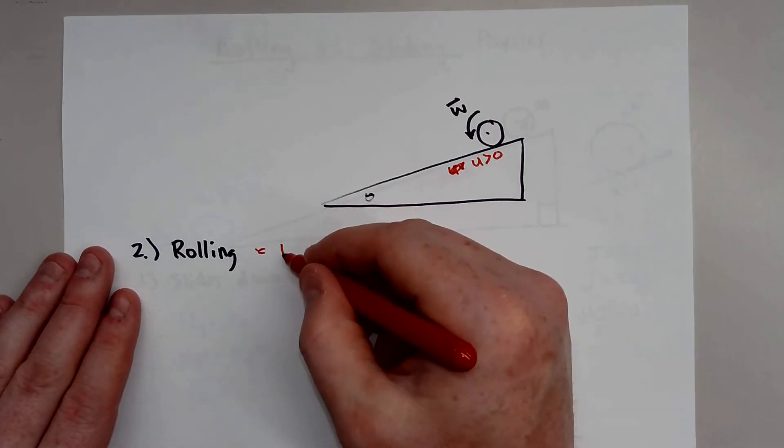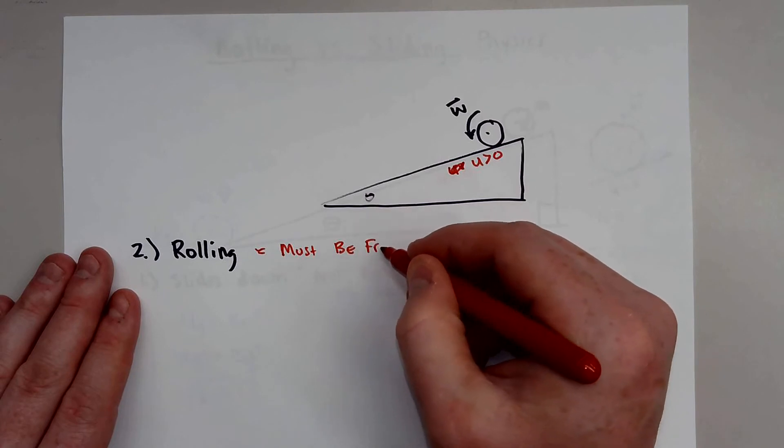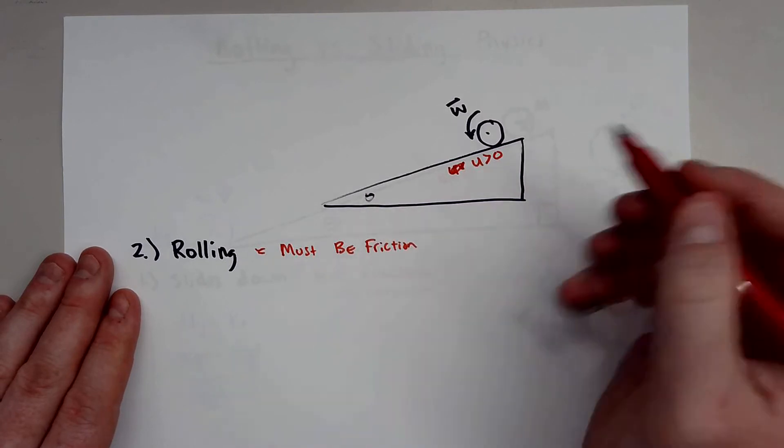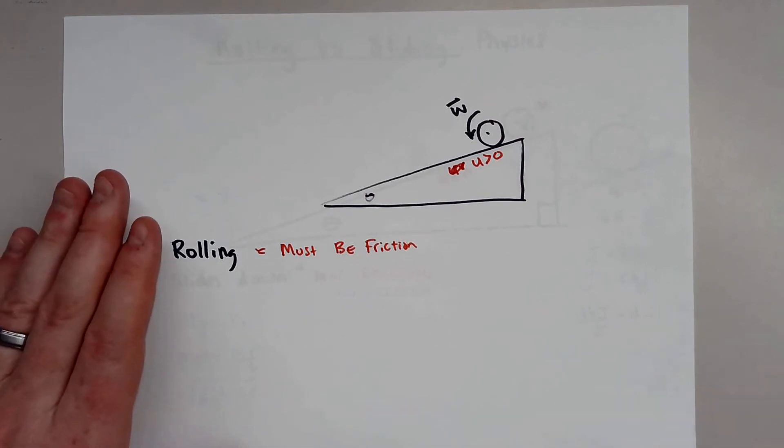now your coefficient of kinetic friction has to be greater than zero. That means there has to be some friction. So rolling means there must be friction. Kind of like we talked about before. If there's no friction, the object cannot rotate.